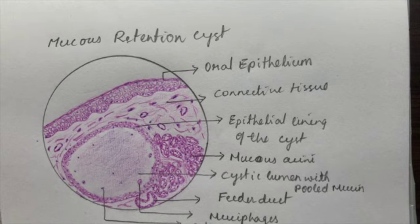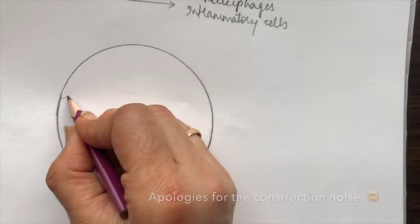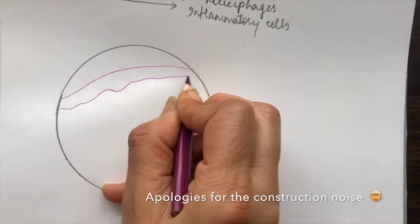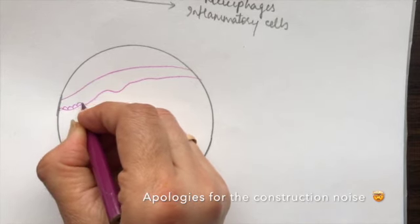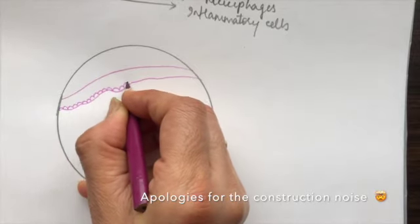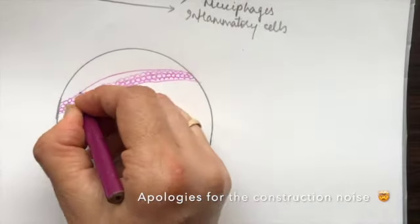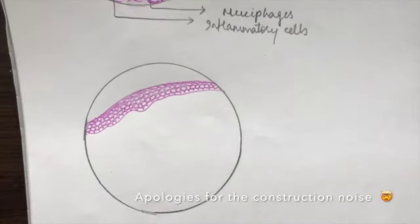Now we will draw the mucus extravasation type of cyst. We draw another epithelium just like we did for the mucus retention cyst. The cyst epithelium above the cystic area will show some amount of atrophy because it's stretched. Now we make the nuclei in these cells.